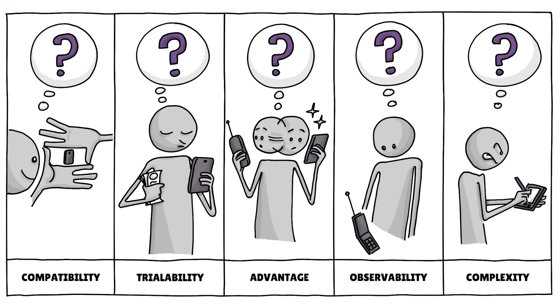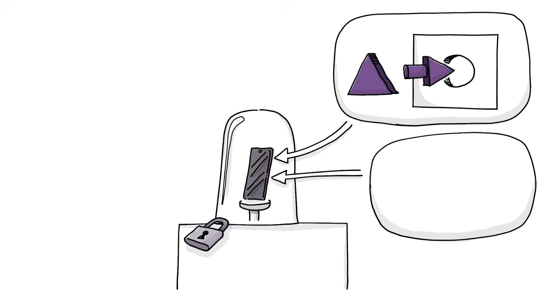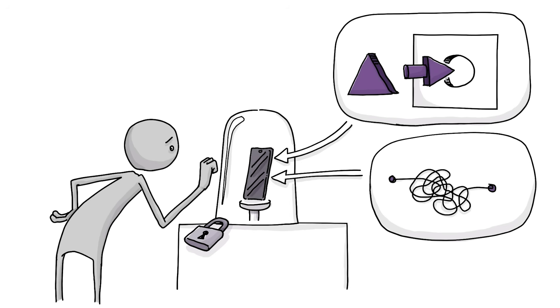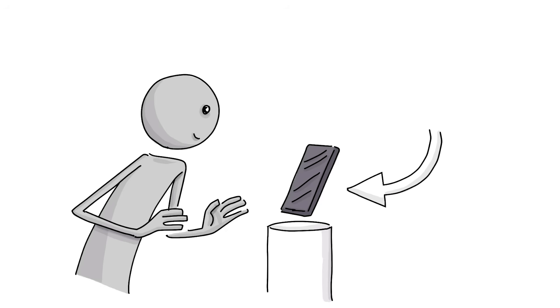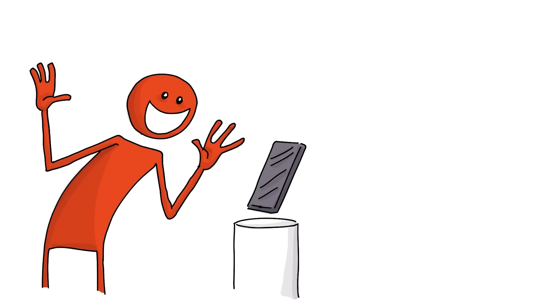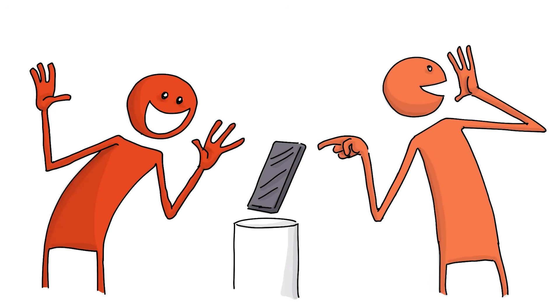For example, an innovation might be incompatible, complex and impossible to try out. All of which reduces its likelihood of being adopted. But if it has a huge edge over current options, innovators might be all over it and early adopters spread the word fast.